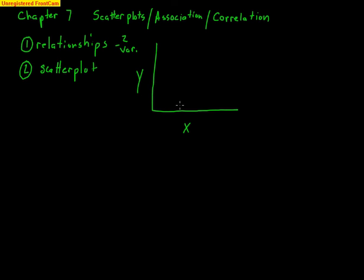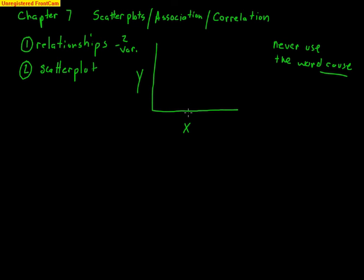We want to determine: does x affect y? One thing we always want to stay away from is never use the word 'cause.' We could say there's an association between x and y, and you've probably heard the word correlation — we'll learn about that shortly. But we would never say x causes y. To show that one variable causes another, you need a well-performed experiment, which we'll learn about next unit.